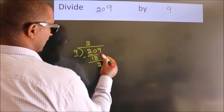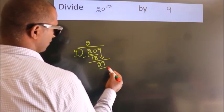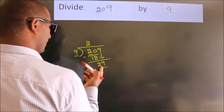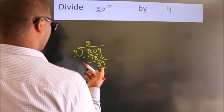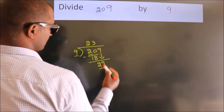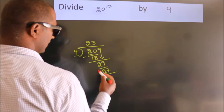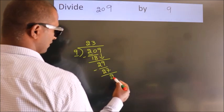After this, bring down the beside number. So, 9 down, giving us 29. A number close to 29 in the 9 table is 9 times 3, which is 27. Now we subtract. We get 2.